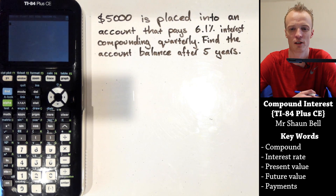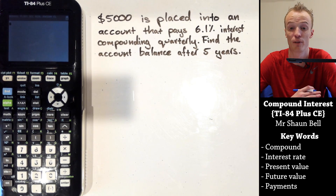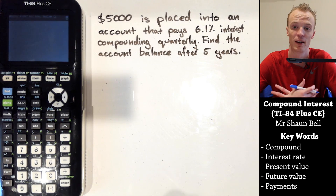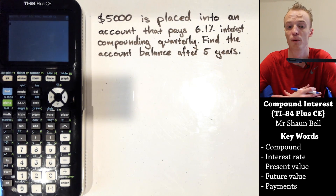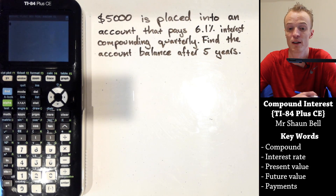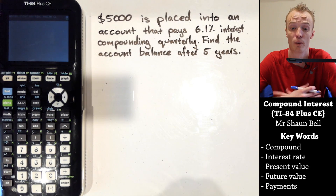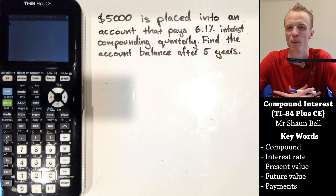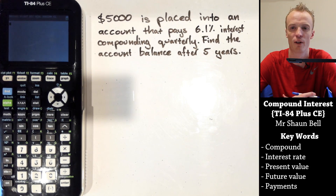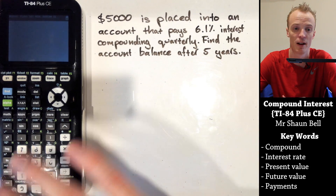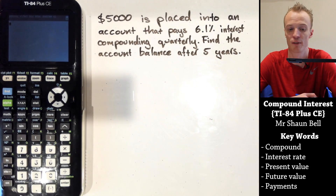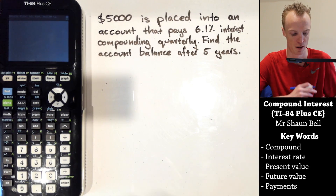What we're going to do today is show you how to solve a problem like $5,000 being invested into an account paying 6.1% interest compounded quarterly, where we want to know the account balance after five years, using a graphics calculator.